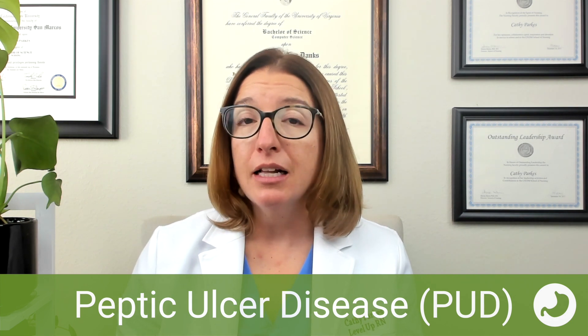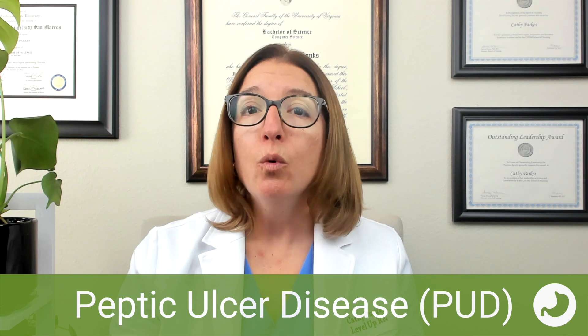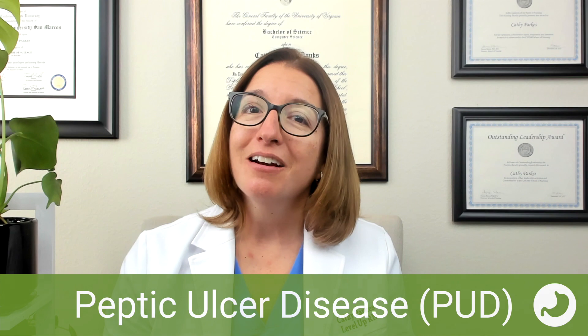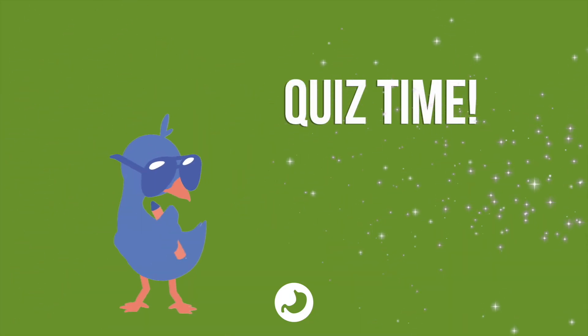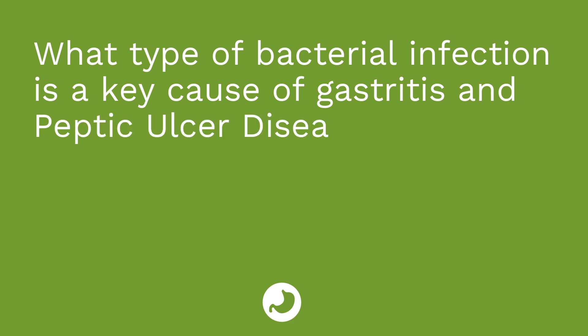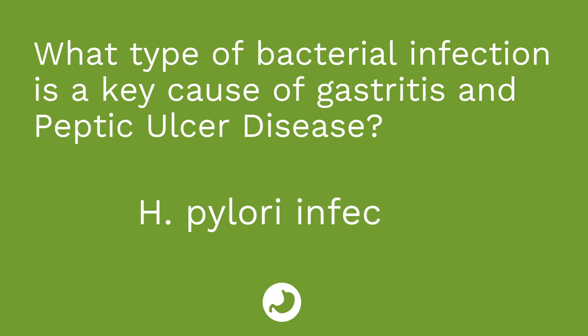And in all likelihood, the patient will need a wound vac after surgery. Alright, it's time for a quiz. First question: What type of bacterial infection is a key cause of gastritis and peptic ulcer disease? The answer is an H. pylori infection.